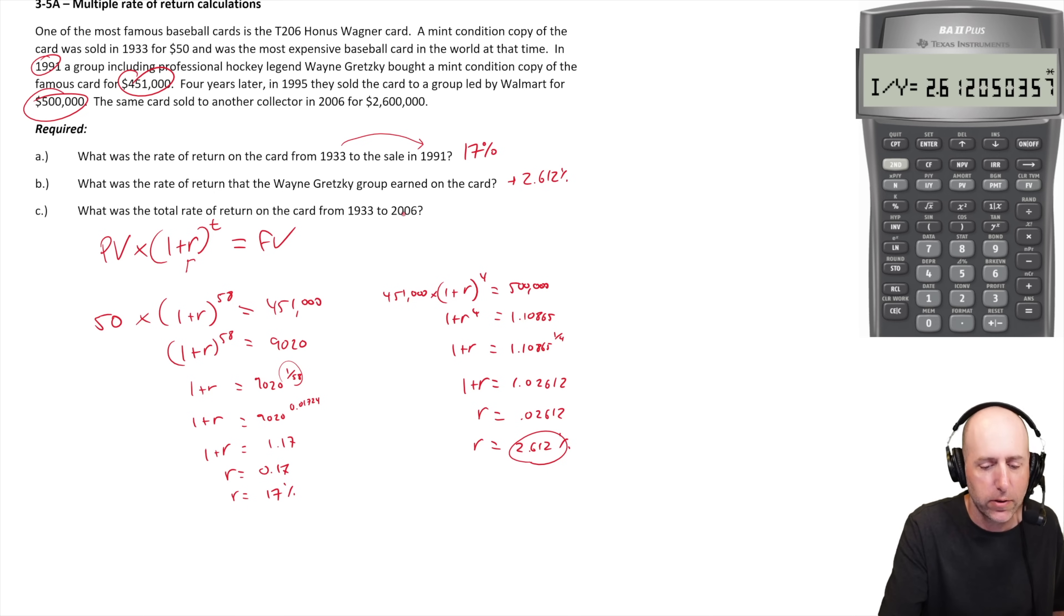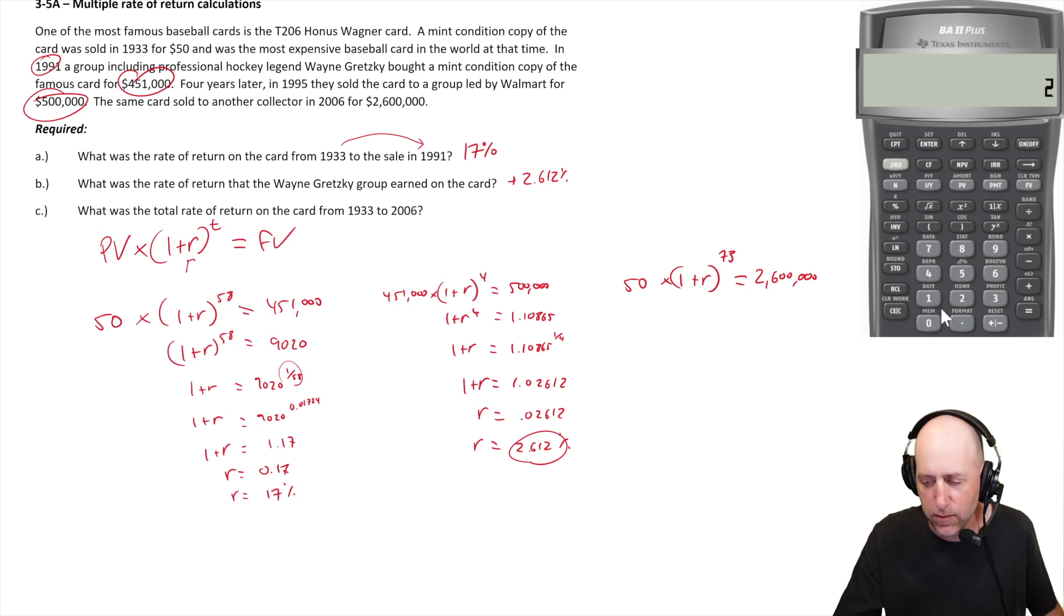Let's do the last piece. What's the total rate of return from 1933 to 2006? In 1933 the PV of the card was $50 times one plus r raised to the power of the number of years, 1933 to 2006 - 73 years. It sold for $2.6 million. We'll solve for r. Divide both sides by 50. This grew by 52,000 times - the value didn't double or triple, it 52,000 times itself. That's what long time periods and high growth will do.